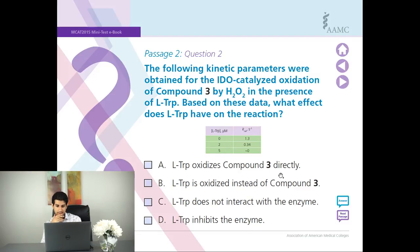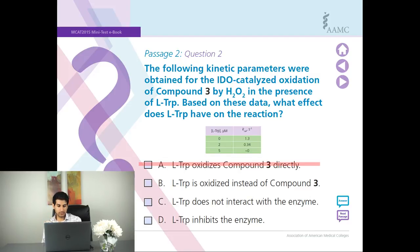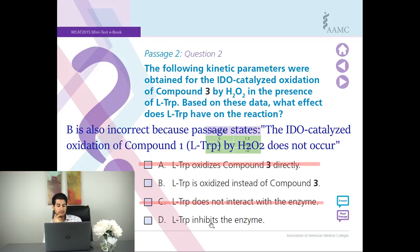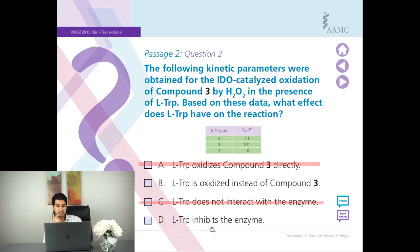So looking at the answer choices: A says LTRP oxidizes compound 3 directly — more oxidation would mean a higher rate, so A would actually be helping the rate. B would be hurting the rate, which is possible. C suggests LTRP is oxidized instead of compound 3, so it could be like a competitor. D says LTRP does not interact — but it does interact because we can see there's a change, so there's got to be some kind of inhibition going on. D sounds really general and inclusive — you can't go wrong with D because it would inhibit the enzyme, that's why your rate decreases. That's perfectly logical.